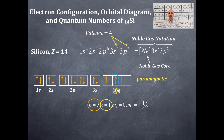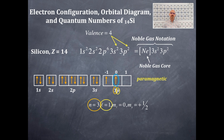Now where does the M sub L value come from? The first thing we have to do is label the boxes. The M sub L values represent the 3D orientation along the XYZ plane. The middle box is always 0. If you imagine a number line, to the right is an increase of 1 digit and to the left is a decrease of 1 digit — so that's plus 1 and minus 1. The question is which box is the circled electron in — it's an M sub L of 0, because I circled that particular box.